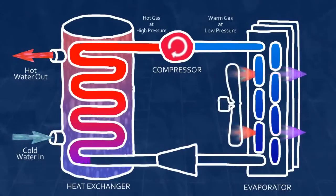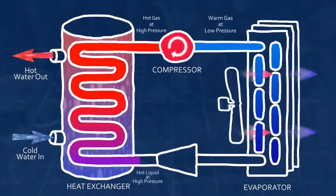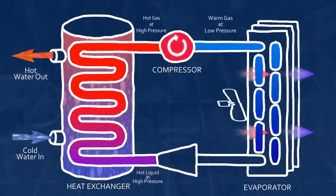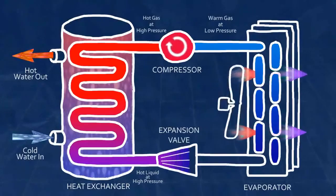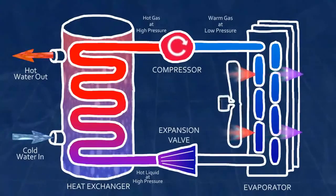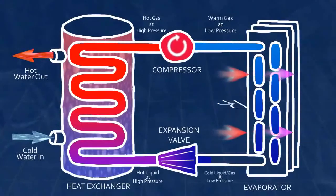Finally, the now cooler, high-pressure liquid refrigerant passes through an expansion valve. As the refrigerant passes through the valve, its pressure and temperature are greatly reduced. Now cold and in a vaporous state, the refrigerant is once again ready to absorb heat from the room air and repeat the cycle.